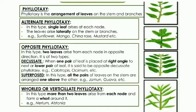Examples of alternate phyllotaxy include sunflower, mango, china rose, and mustard. In opposite phyllotaxy, two leaves arise from each node in opposite directions. There are two types: opposite decussate, where one pair of leaves is placed at a right angle — 90 degrees — to the next lower pair; and opposite superposed.